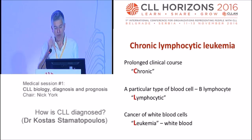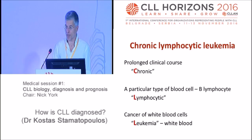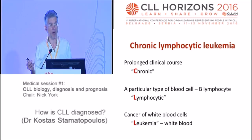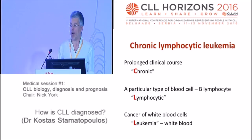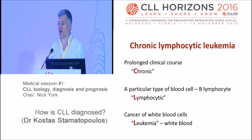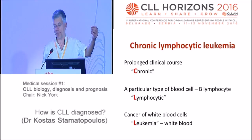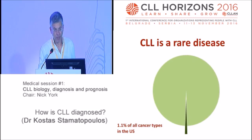It's chronic because the disease course is prolonged. It's lymphocytic because the cell that went crazy and gave rise to this tumor is a lymphocyte, a kind of white blood cell. And finally, it's leukemia — a nice Greek word — it means white blood, because when you have plenty of white blood cells, your blood, if you let it stand, will appear white.